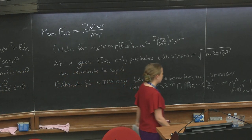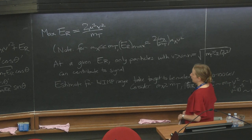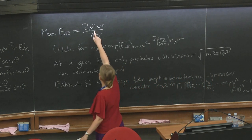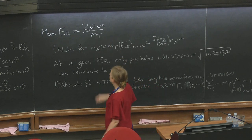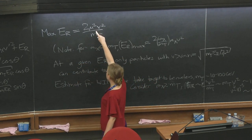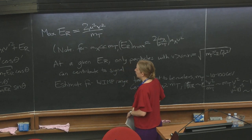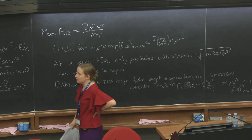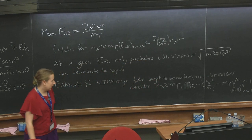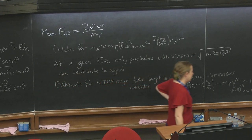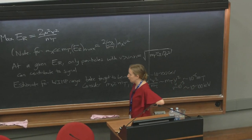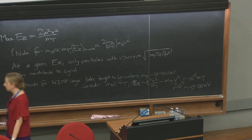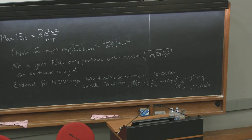But if I were instead to take a 100 GeV target and a 1 GeV dark matter particle, then this would be V² × 1 GeV × 1/100, so V² × 10 MeV. Instead of looking at 10 to 100 keV recoils, I'm suddenly looking for 10 eV recoils as I go down to the GeV scale. That's why it's hard to detect light dark matter with this strategy.